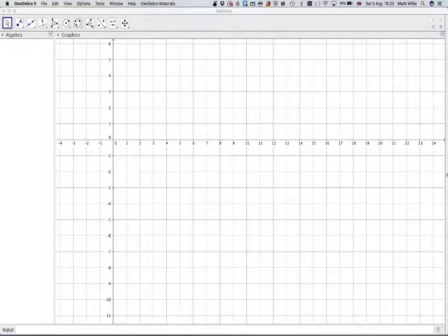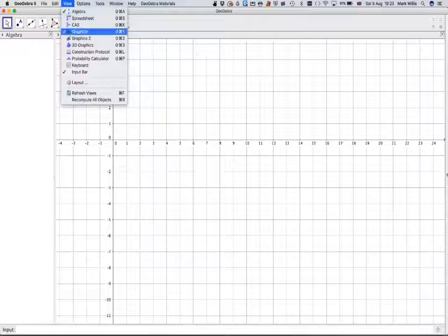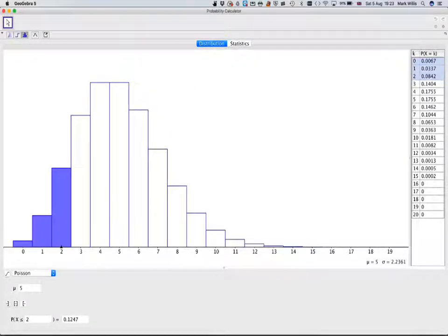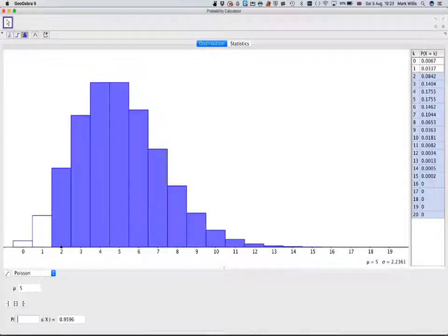let's just go to our GeoGebra for one minute. And we can get to the view for probability calculator from the view menu. And we want to go to a Poisson and we want a Poisson 5 and we want 3 or more. So that will look like that. Now in order to calculate this, this area here,